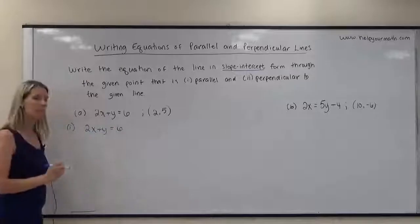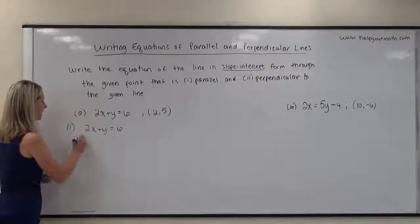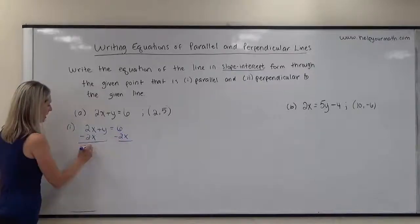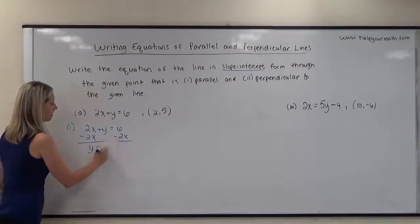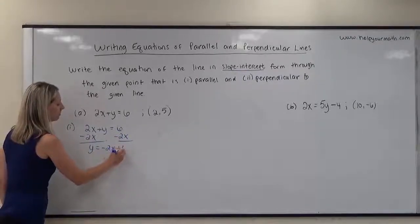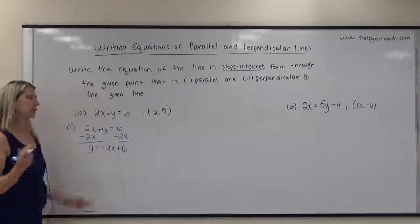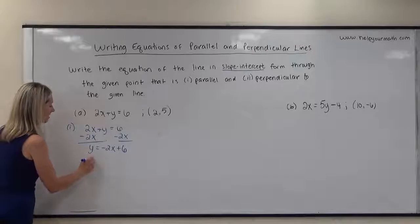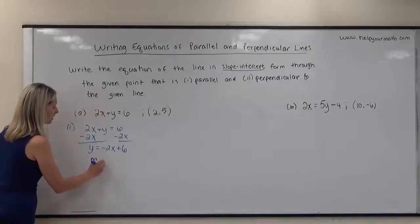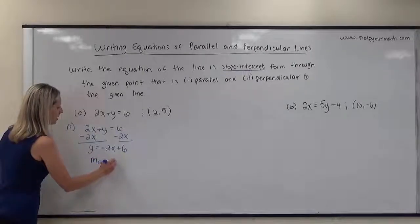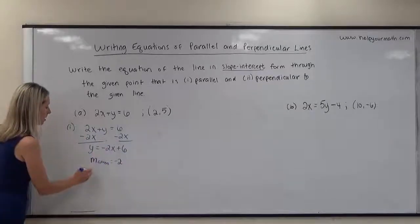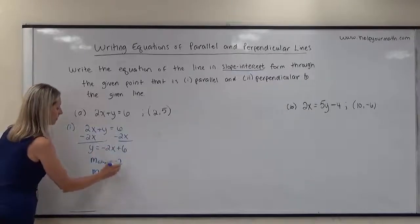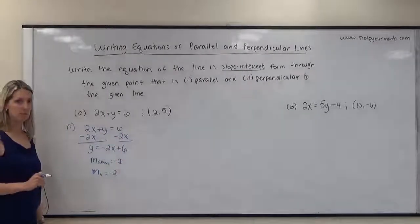To do that, I need to get y by itself. y is being added by 2x, so I'm going to subtract 2x from both sides. I end up with y equals negative 2x plus 6 — the sign is assumed positive since there was none. Now I know that the slope of the given line, m-given, is negative 2, and the slope of any parallel line will also be negative 2.